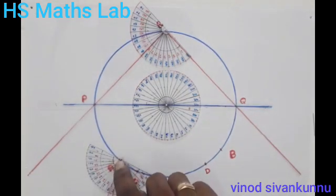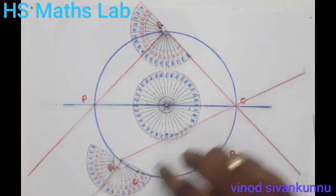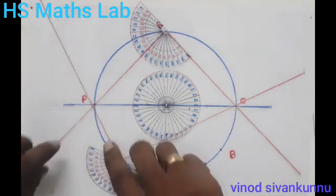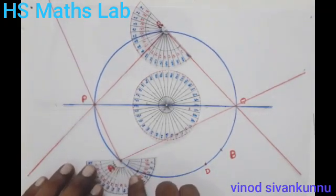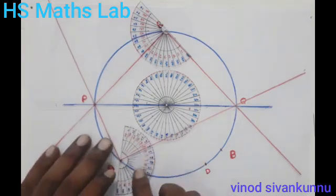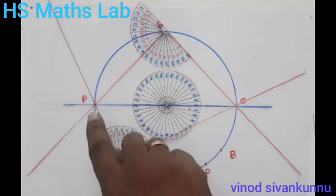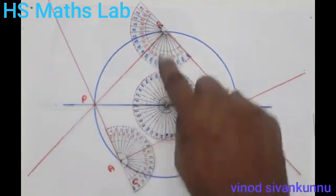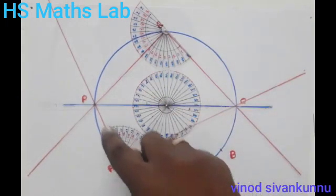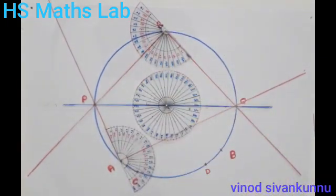We can also join two lines from point A to P and Q. The angle PAQ is 90 degrees. Both angle PRQ and angle PAQ are 90 degrees each. Therefore, the sum of angle PAQ and angle PRQ is 90 plus 90, which equals 180 degrees.